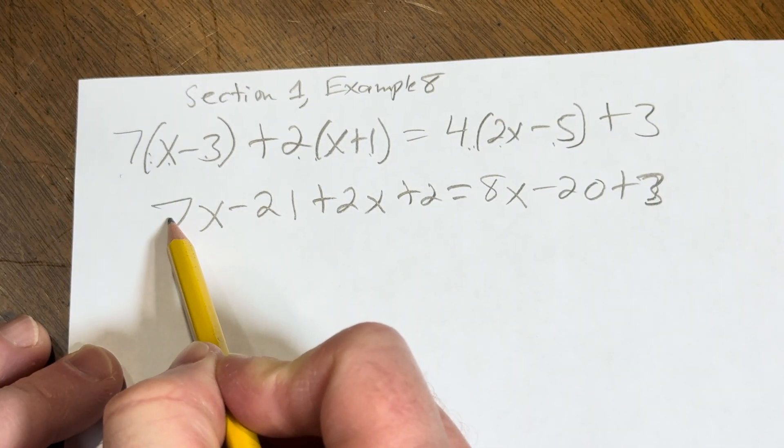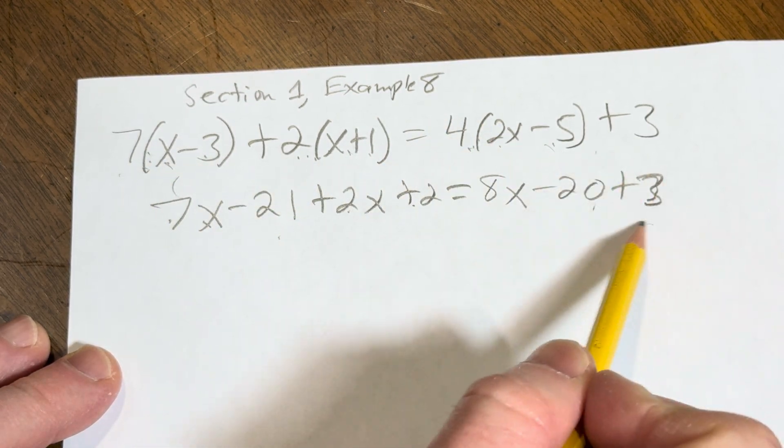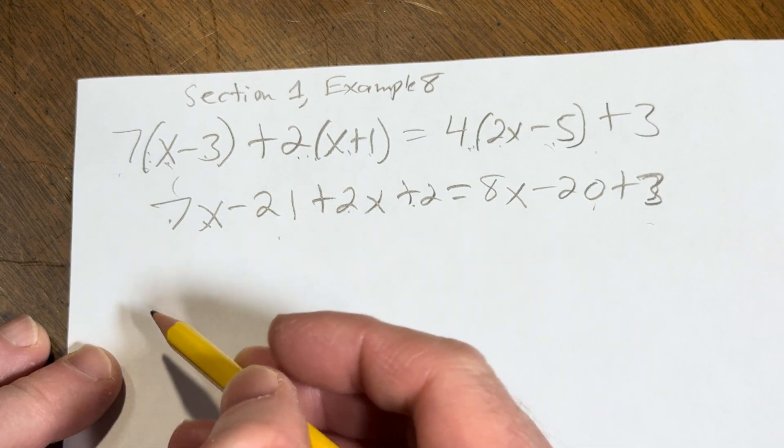So, 7x, minus 21, 2x, 2, 8x, minus 20, 3. Everything looks good. Combine like terms.